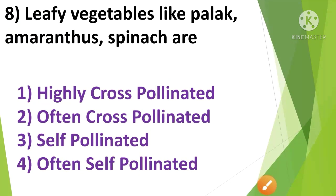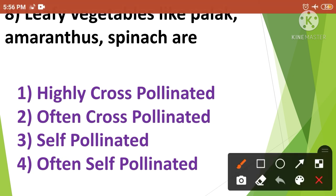Next question: Leafy vegetables like palak, amaranthus, and spinach are — 1st option highly cross-pollinated, 2nd option often cross-pollinated, 3rd option self-pollinated, 4th option often self-pollinated. The correct answer is option 1st, highly cross-pollinated. The leafy vegetables like palak, amaranthus, and spinach are highly cross-pollinated.